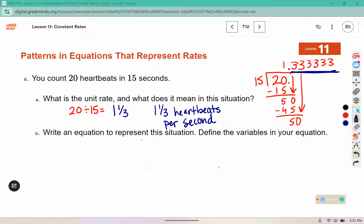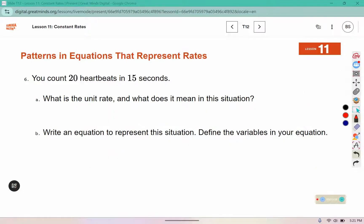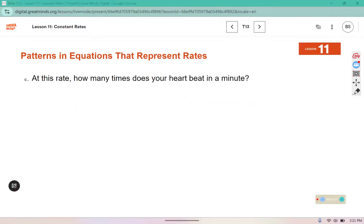Now we need to write an equation. First, let's define our variables. We're going to use h for heartbeats, and I don't like to use s even though it's seconds, because s kind of looks like a 5, so I'm going to use t for the time in seconds. It's not wrong if you use s, it's just harder to see that it's an s instead of a 5. So the time gets multiplied by 1 and 1 third to tell us the heartbeats.